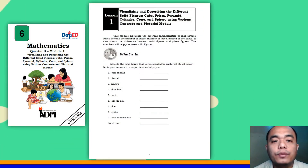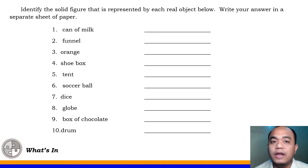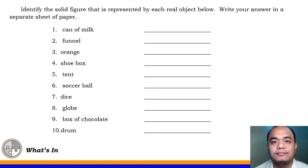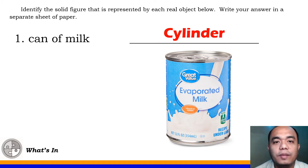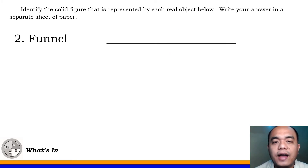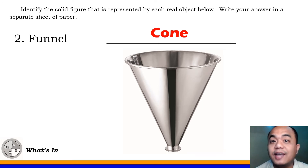This time we will proceed to the 'What's In' part of the module. Direction: Identify the solid figure that is represented in each item. Number 1, can of milk — what kind of solid figure is a can of milk? That's a cylinder. Number 2, funnel — funnel looks like this. So what solid figure is that? That's a cone.